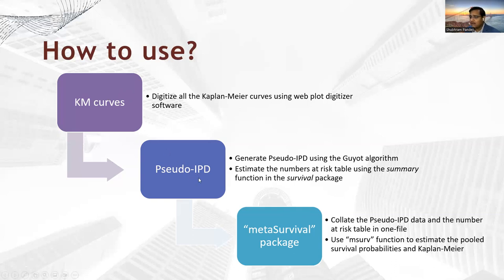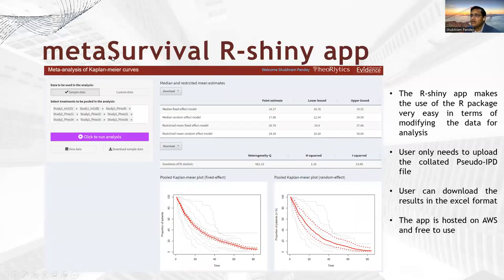If you want to avoid estimating the number-at-risk table and avoid writing R codes, you still have to digitize the Kaplan-Meier curves and generate the pseudo IPD. This package comes with an R Shiny app as well, which I can show here. This is the MetaSurvival R Shiny app, developed by me. In this app you just need to upload the pseudo IPD data — no need to estimate number-at-risk tables. I will show you this app live, and you can see how convenient it is to use.